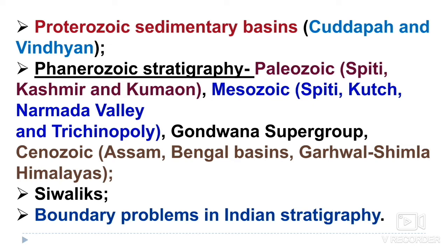In Cenozoic stratigraphy you have to study the Assam-Bengal Basin, Karewa, Siwalik Himalaya, and the Siwalik Group — the Siwalik Group is very important. For Siwalik Group you generally have to give the stratigraphy and the vertebrate fauna. The type of question matters — for example, if asked to tabulate the flora and fauna or the stratigraphic sequence of the Siwalik Group, you should draw a table and write the sequence of formations. Boundary problems in Indian stratigraphy are also important.